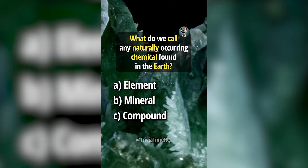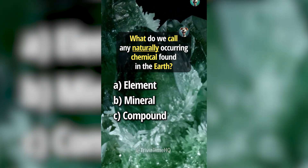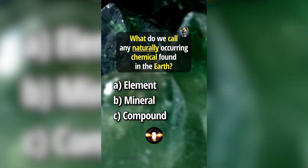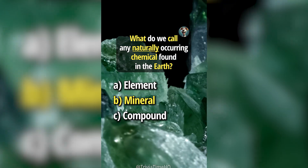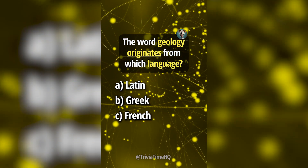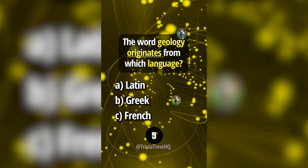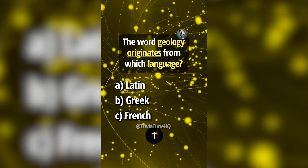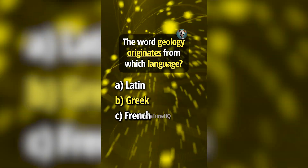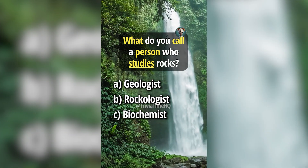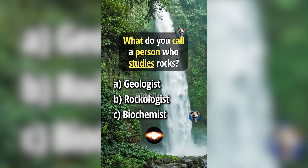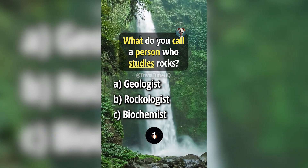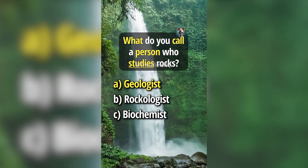What do we call any naturally occurring chemical found in the Earth? The word geology originates from which language? Answer B, Greek. What do you call a person who studies rocks? Answer A, geologist.